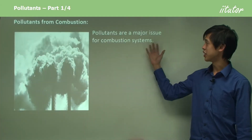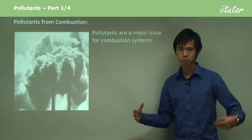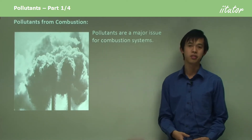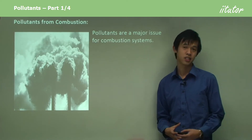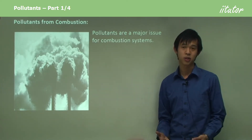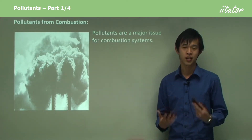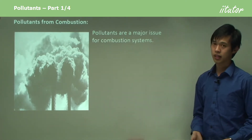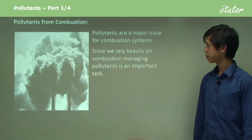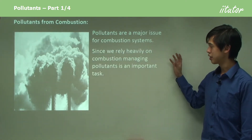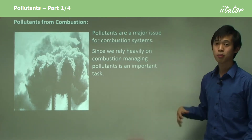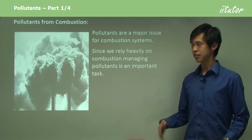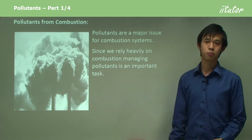Pollutants from combustion are a major issue for combustion systems. This is the big crux of why people don't like combustion, because there are lots and lots of pollutants. The only reason we held onto combustion as a system is because it's really good at what it does — giving us really fast energy and a lot of it. We rely heavily on combustion, so managing pollutants is important. Carbon tax and things of that nature are all ways to help us deal with this pollution problem.